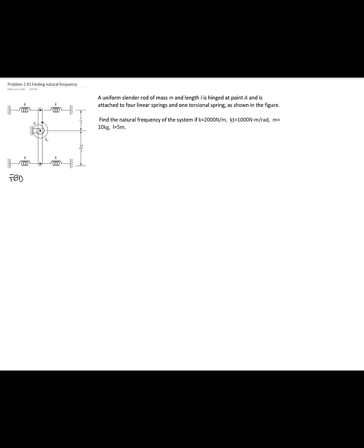Let's start by doing our free body diagram. We have active forces and reactive forces. The only active force is the weight, and then we have the reactive forces at the pin, which gives two reactions, the four linear springs, and the torsional spring.